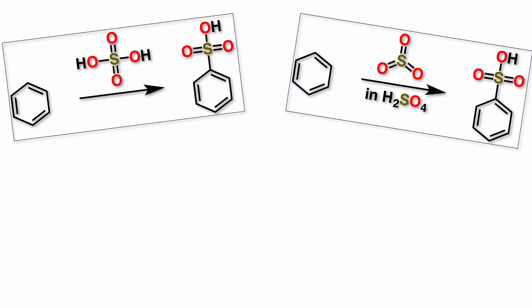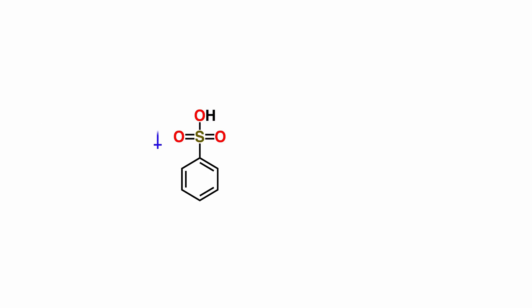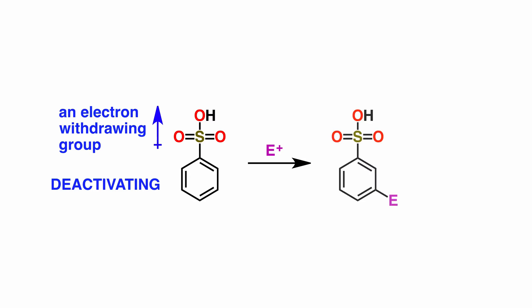In this lesson, we looked at two methods for the sulfonation of benzene. We then looked at the properties of the derivative that we made, benzene sulfonic acid. We saw that the introduction of this group makes benzene less reactive to further EAS reactions. However, when it does react, the groups will be added at the meta position.